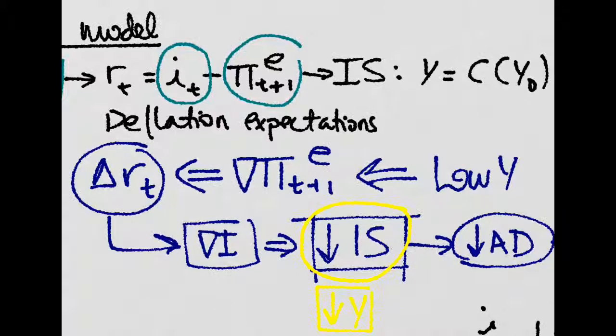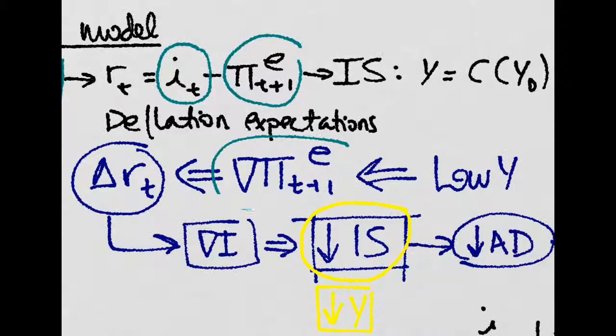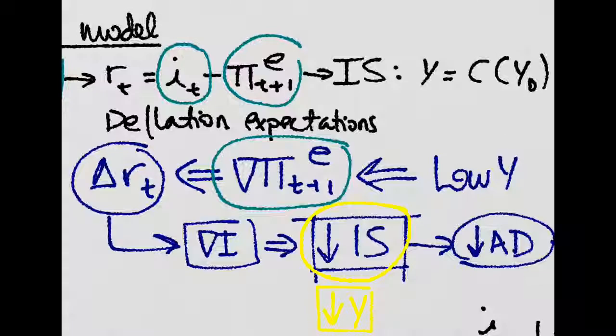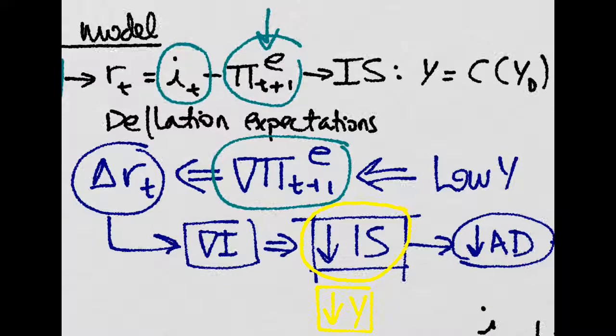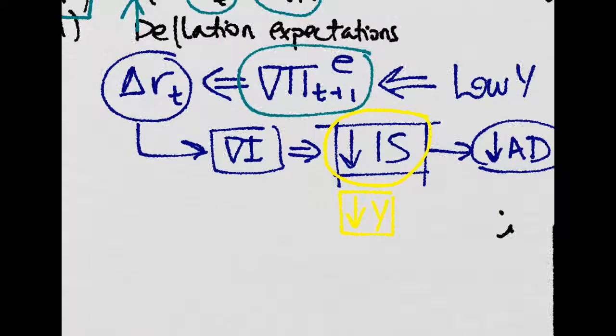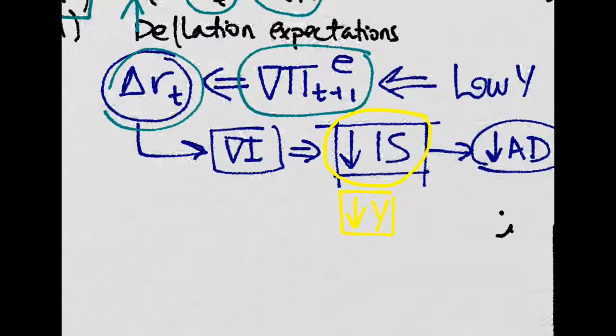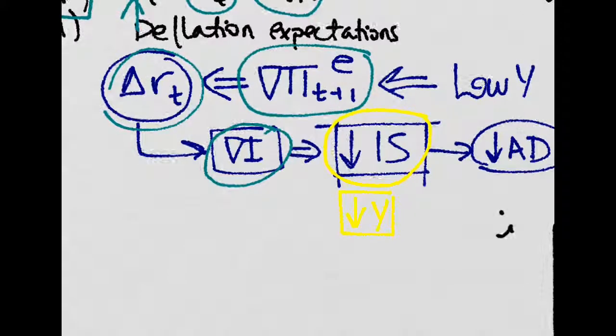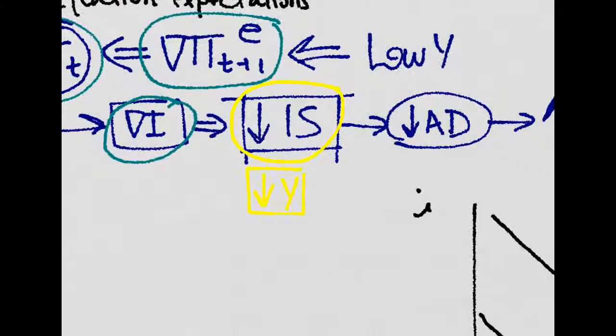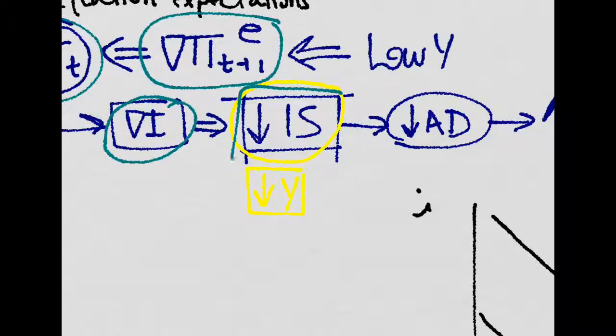So imagine we have a low output. That is, we have the inflationary expectations. Then this goes down, and this goes up. And if we have higher real interest rate, then we'll have lower investment. Then the IS curve will shift down,